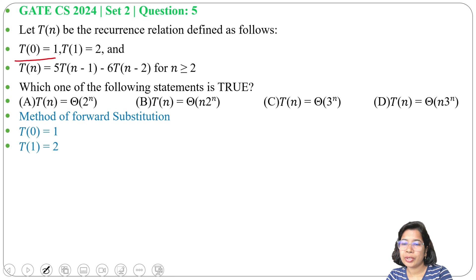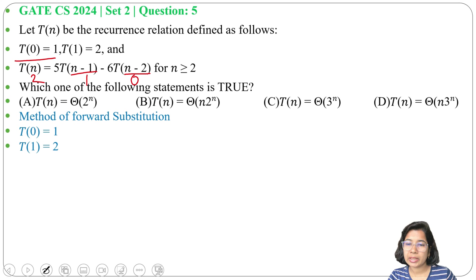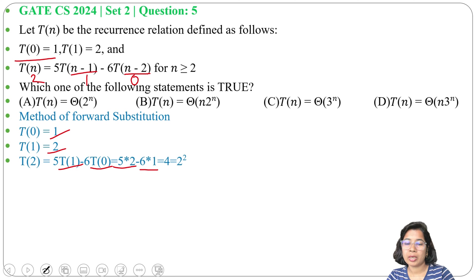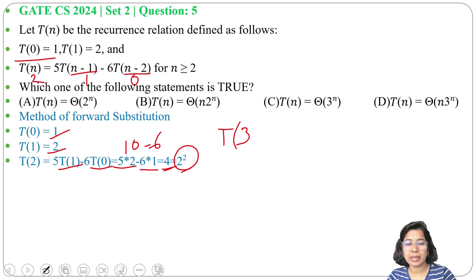Now what will be T(2)? For n=2, we write T(2) = 5·T(1) - 6·T(0). T(1) is 2 and T(0) is 1, so 5×2 - 6×1 = 10 - 6 = 4. And 4 we can write as 2 to the power 2.